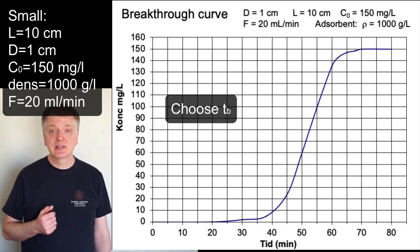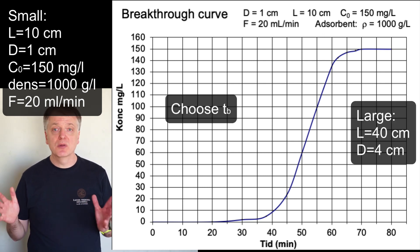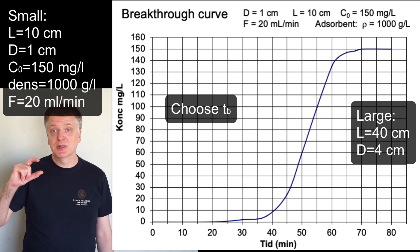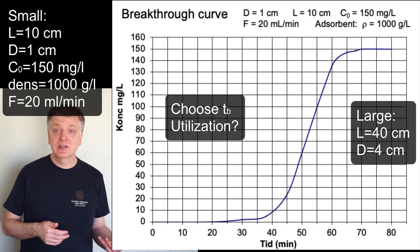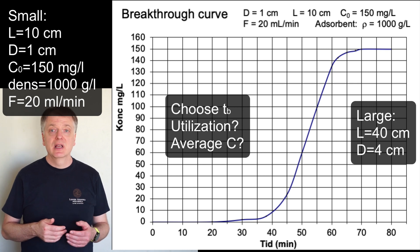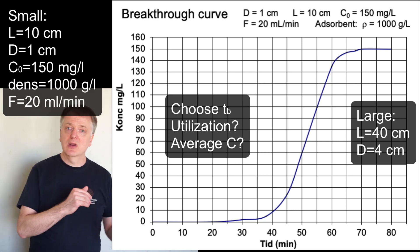Choose a breakpoint and scale up to a 40 cm column with a diameter of 4 cm. Then calculate the degree of utilization and the average concentration in the outlet of the small and the large column.